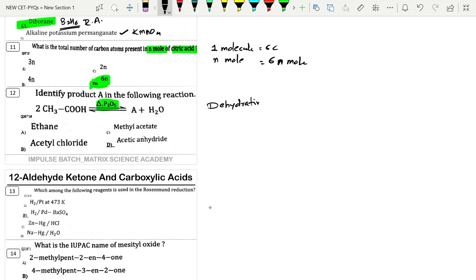P2O5 - it is a dehydrating agent. Dehydrating means water is removed. That is a dehydrating agent and the product is anhydride. This is the product formed - anhydride. Anhydride is option D.